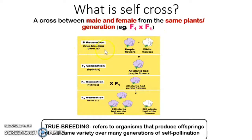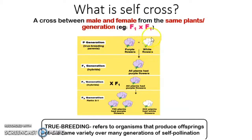The P generation refers to the parent. For the crossing here, it will involve true breeding parents. True breeding means you have to do the crossing between homozygous dominant and homozygous recessive. The dominant color here refers to purple, while the recessive phenotype refers to white.